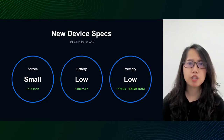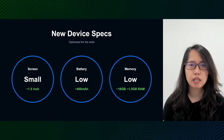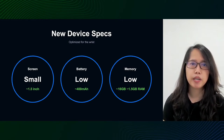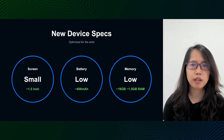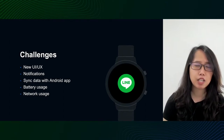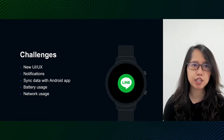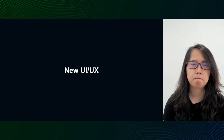Working on WearOS is also a new experience for Android engineers like me — small, low-spec devices where UI/UX is optimized for the wrist. They have small screens, low battery, and low memory. Each of these constraints requires us to consider carefully when implementing the Live WearOS application. I will categorize the challenges into five sections: new UI/UX, notification, sync data with Android application, battery usage, and network usage.